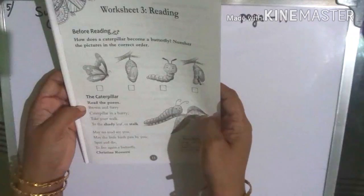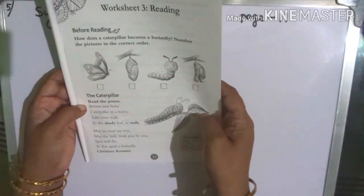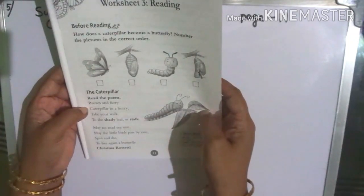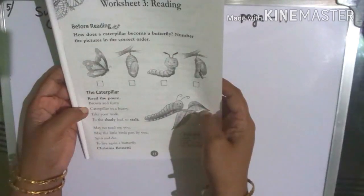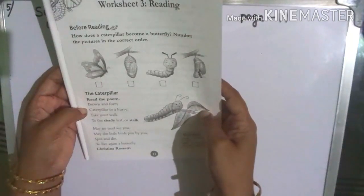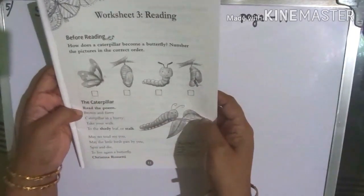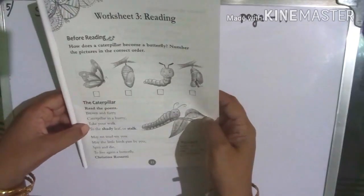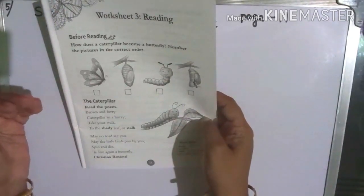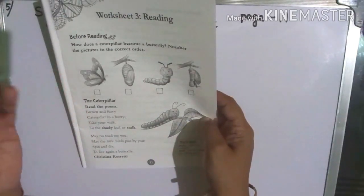Brown and furry caterpillar - brown color and with lots of hair on its body, furry. Caterpillar in a hurry - see the picture, the caterpillar is in a hurry. Take your walk - you can see it is slowly, slowly moving on its path.